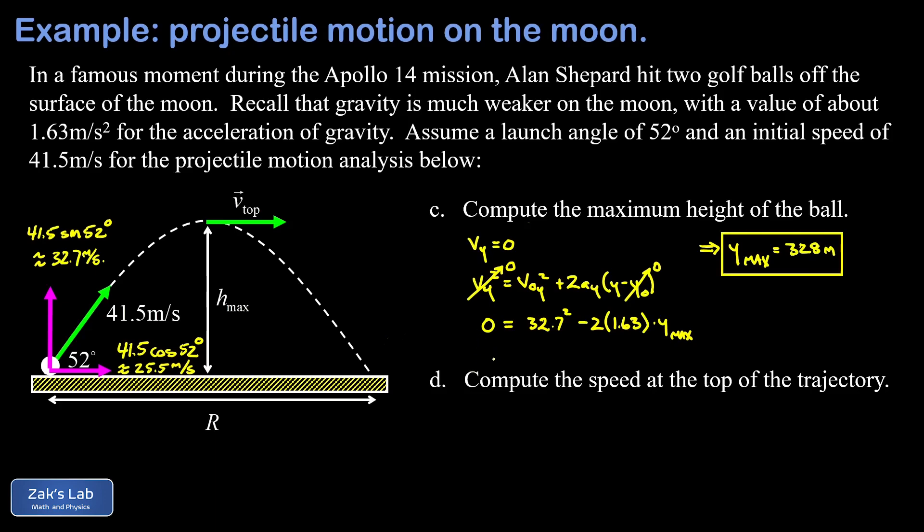Finally, in part D, we're asked to find the speed at the top of the trajectory. You might be able to find some way to show a bunch of work on this, but that's not my intent. This is really just a concept question. I know at the top of the trajectory that V_y is equal to zero, so the y component of velocity vanishes.